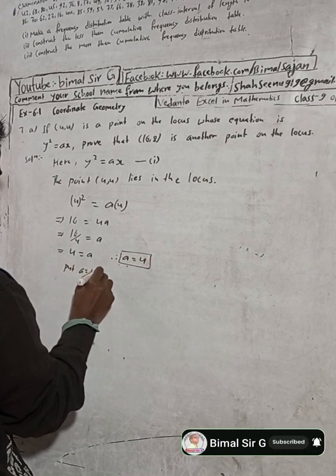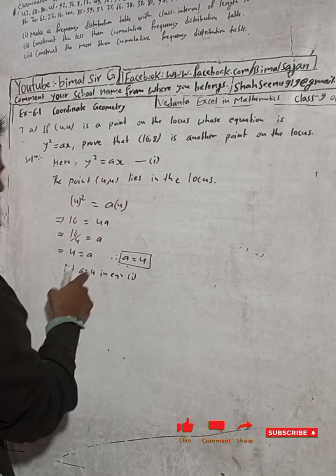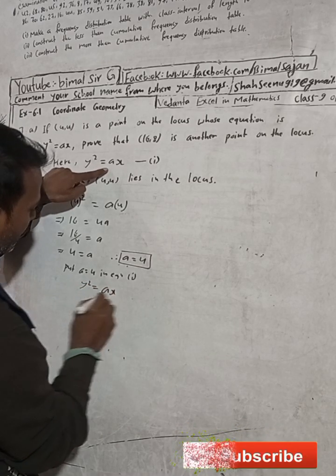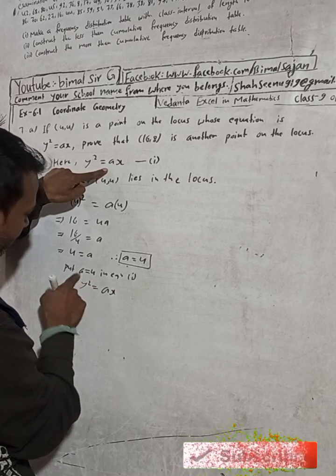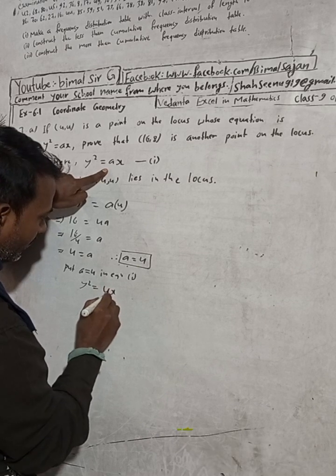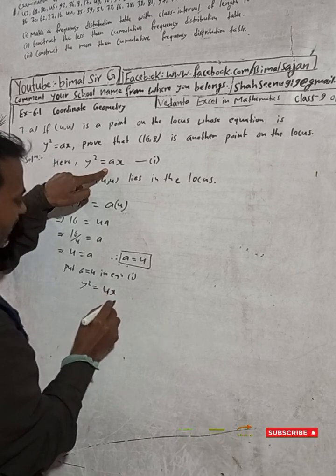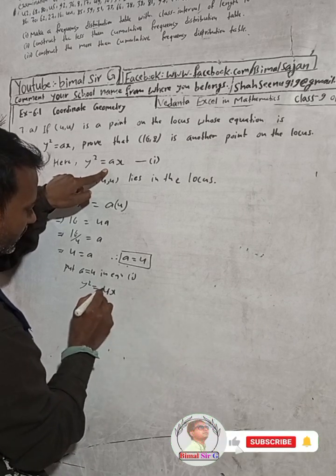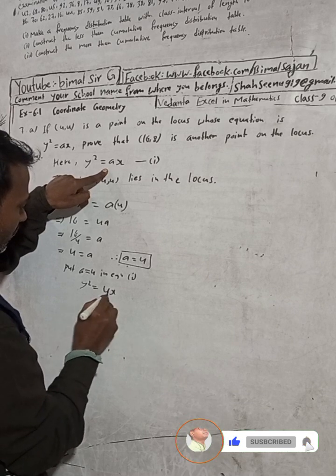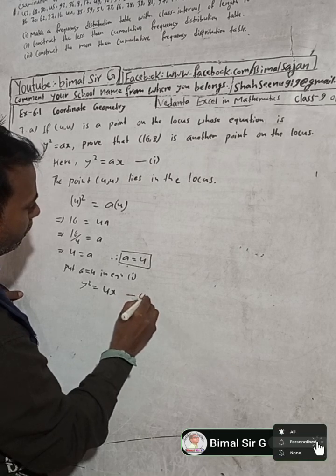Now put a = 4 in equation 1. So y² = ax becomes y² = 4x. This is our equation 2.